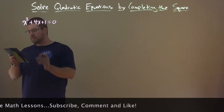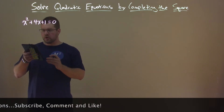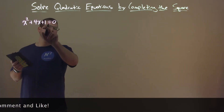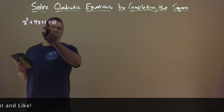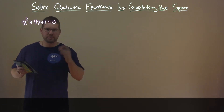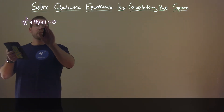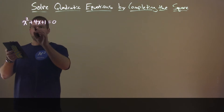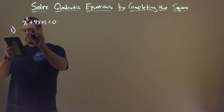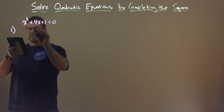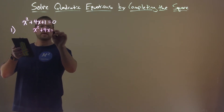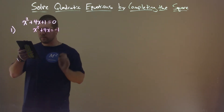Our a value is 1 here. We know that we can't find two numbers that multiply to be 1 but add to be 4. So our first step is to subtract 1 from both sides, getting us x squared plus 4x equals negative 1.